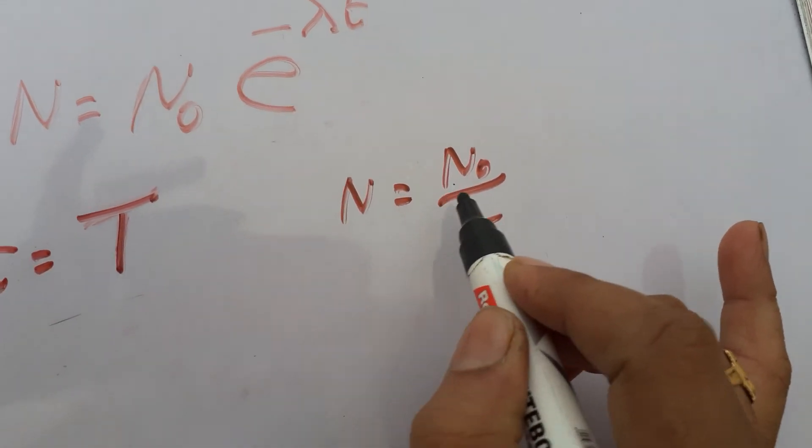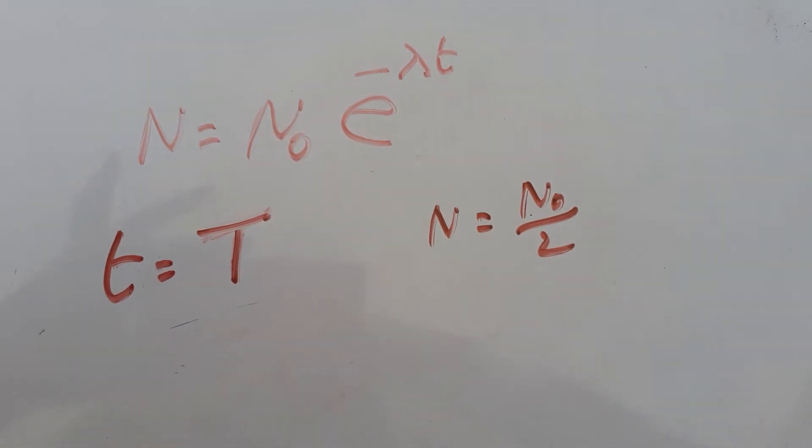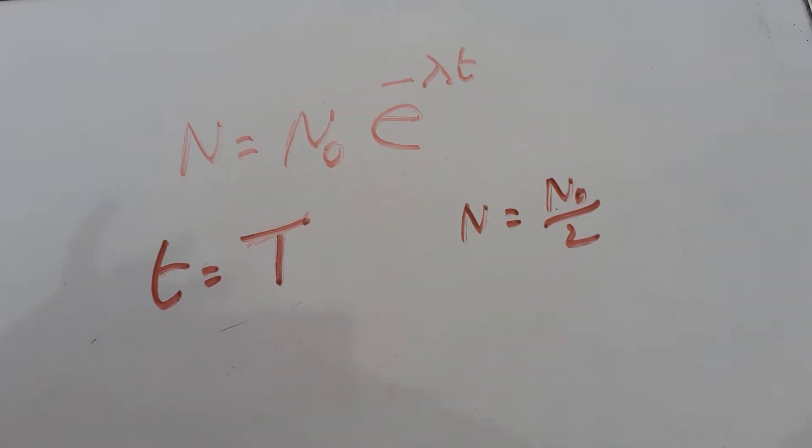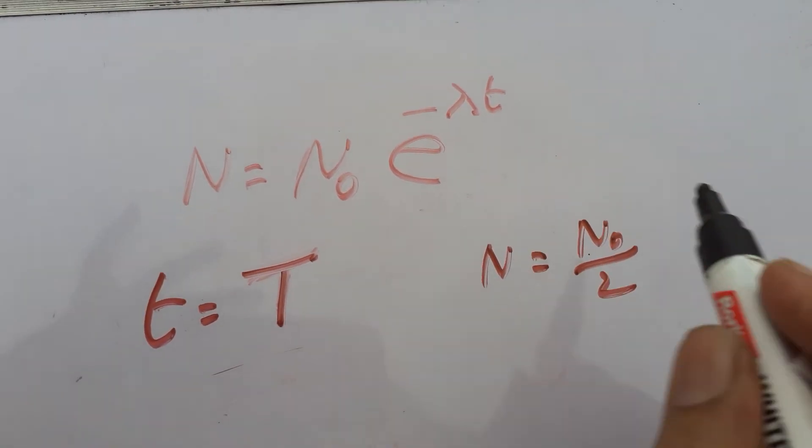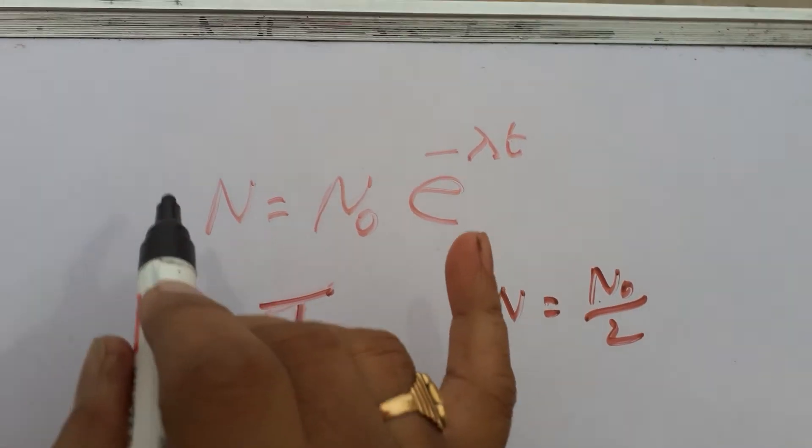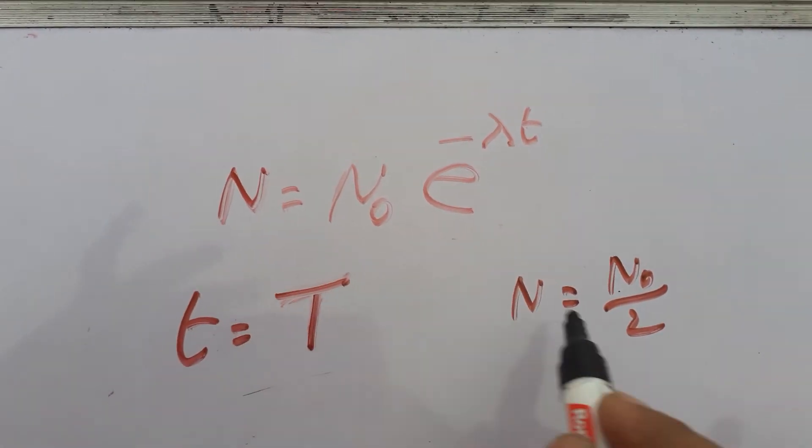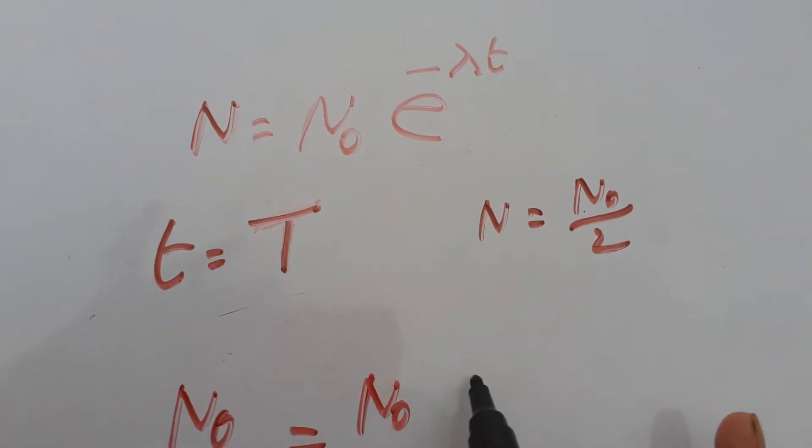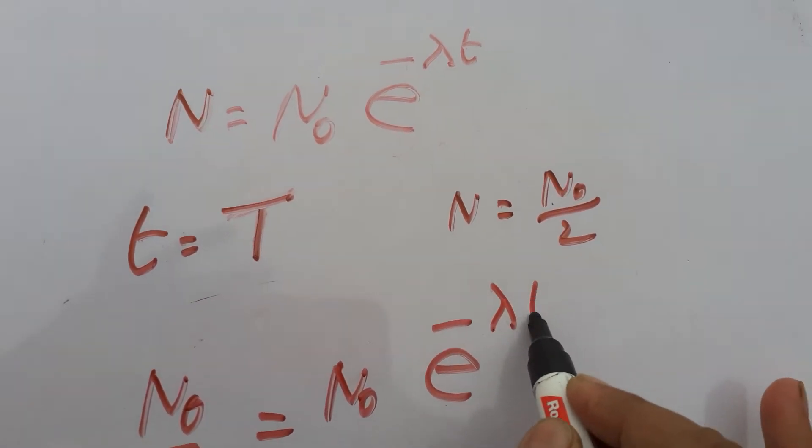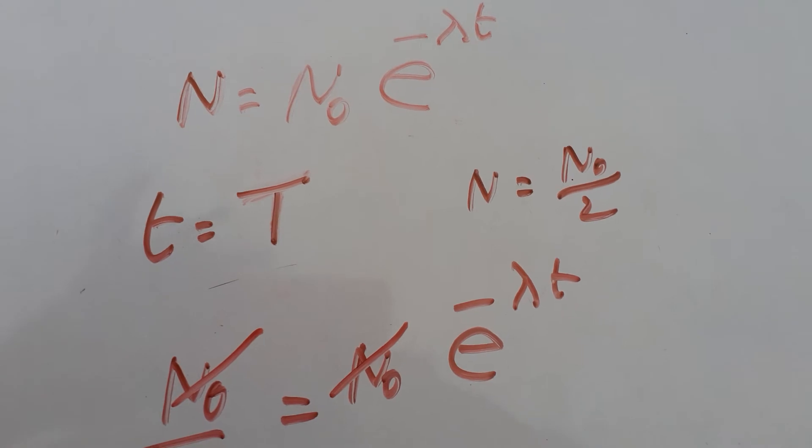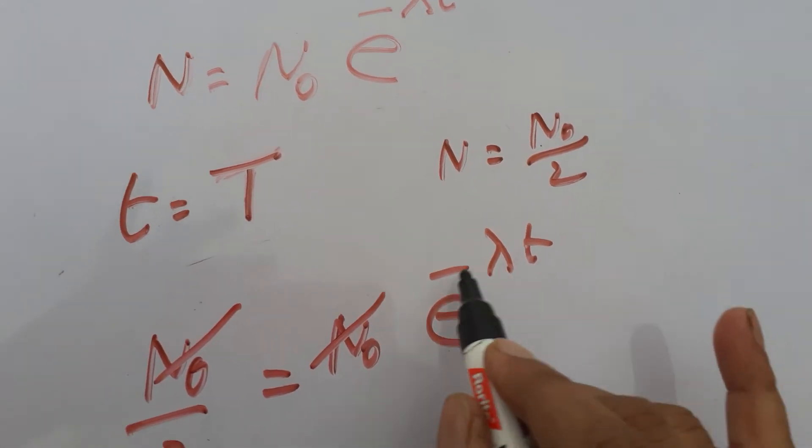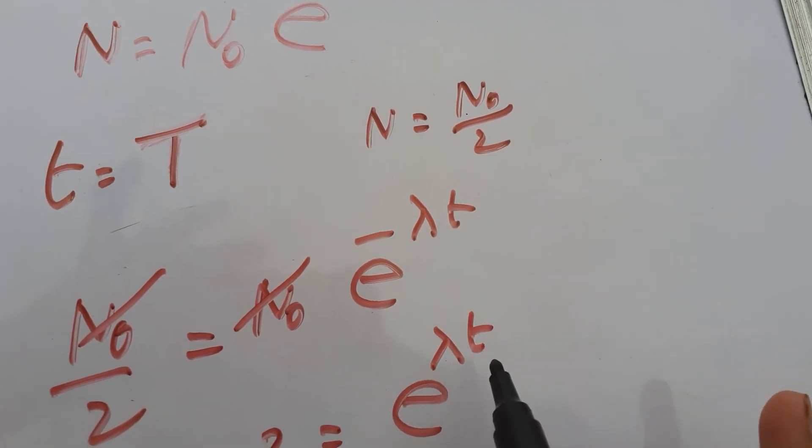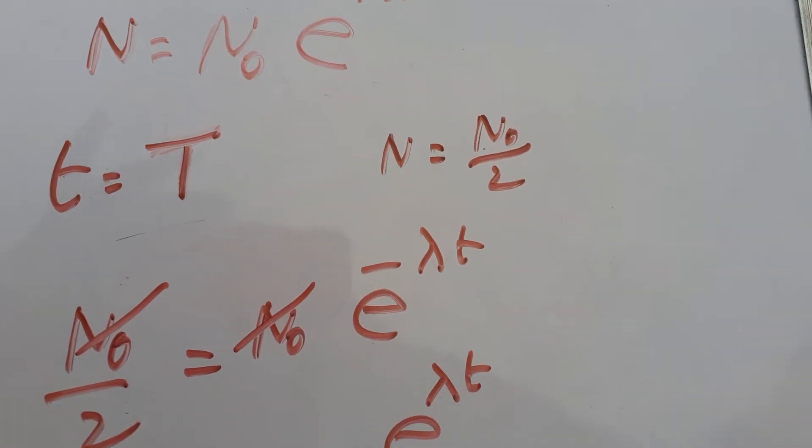If t = T, N = N₀/2. The time in which the number of atoms becomes half of the initial atoms. Therefore, substitute the values: N₀/2 = N₀e^(-λT). N₀ cancels. Therefore, 2 = e^(λT). Now take logarithm both sides.